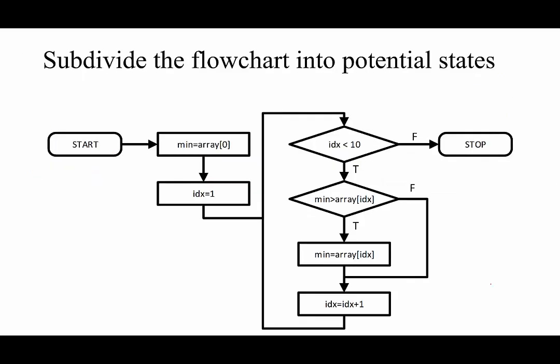Now we know what our state machine needs to control — let's divide our flowchart into a set of potential states. It's always good to have a wait state that we will return to if the system gets reset; we can delete it later if we decide we don't need it. Another easy state to identify is a done state, during which we will raise a flag to the user indicating that the computation is done. Beyond these two states, we want to look for places where we are storing data into either our minimum register or we update the index. Fortunately, we can change both the minimum register and our index in the same clock cycle since they are in different memory load devices.